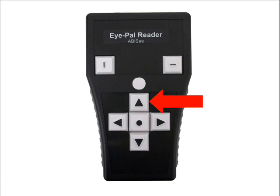Below the Up Arrow button is the Pause Resume button. It is marked with a raised black circle. This button is used to pause or resume reading.